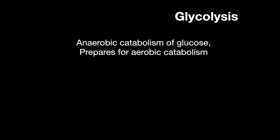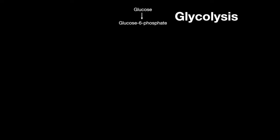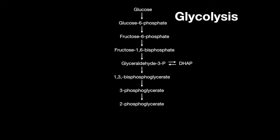Glycolysis is the anaerobic catabolism of glucose to prepare it for aerobic catabolism. It starts with glucose and goes through these intermediates, where it finally ends up as pyruvate.